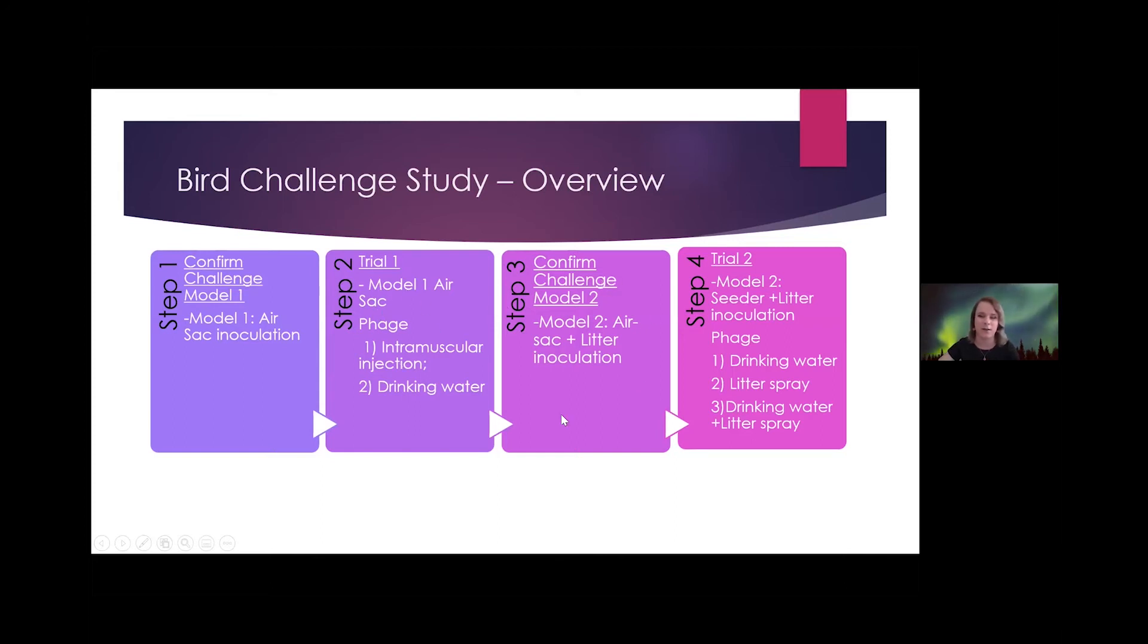Step three is we want to inoculate the birds' litter with our APEC strains to see if we can challenge them via a more indirect model. And then step four is to apply phages to drinking water and also to the litter to treat these birds which have been seeded with APEC in their litter.